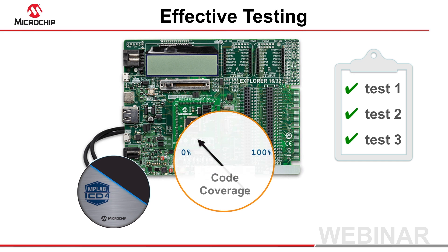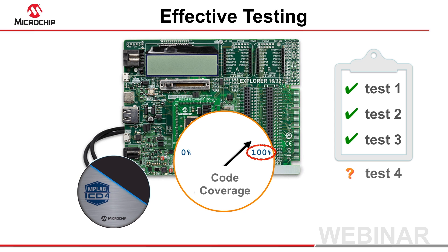Code coverage is a measure of the degree to which your program source code has been executed. And unless you can prove that your tests have been performed over all of the code in your program, those tests might be missing defects.